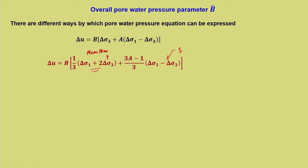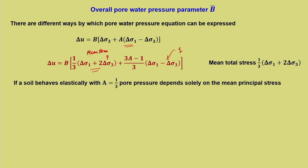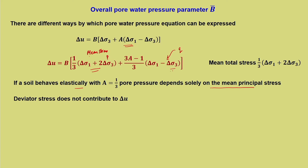If you expand this, you get the same equation. The mean total stress is (delta sigma 1 + 2 delta sigma 3) / 3. Now, if soil behaves elastically, we know that a = 1/3. If you substitute that, the deviator stress term becomes zero. So, pore pressure depends solely on the mean principal stress when the soil behaves elastically. For conditions where a ≠ 1/3, deviator stress has significant influence on delta u.